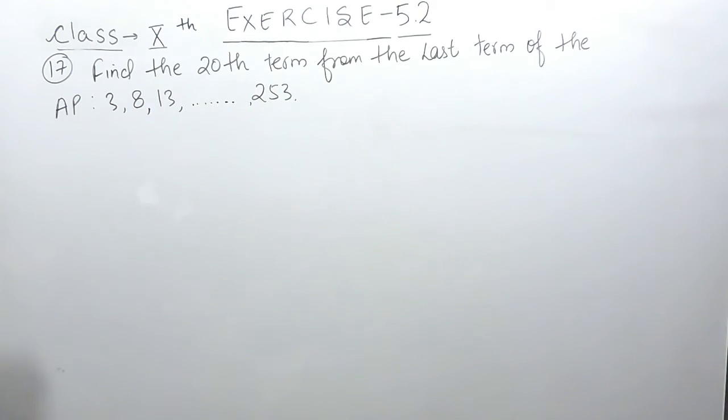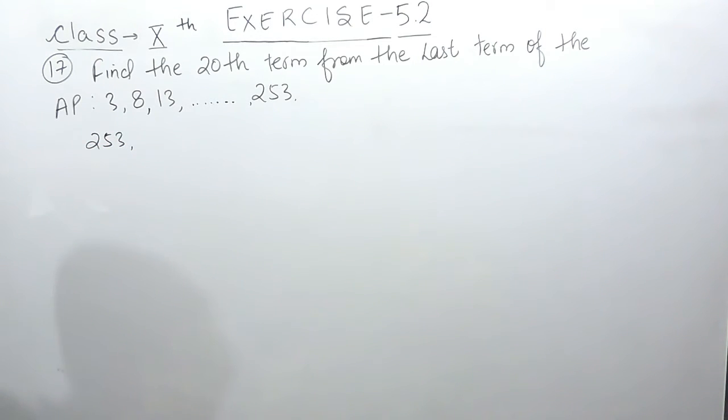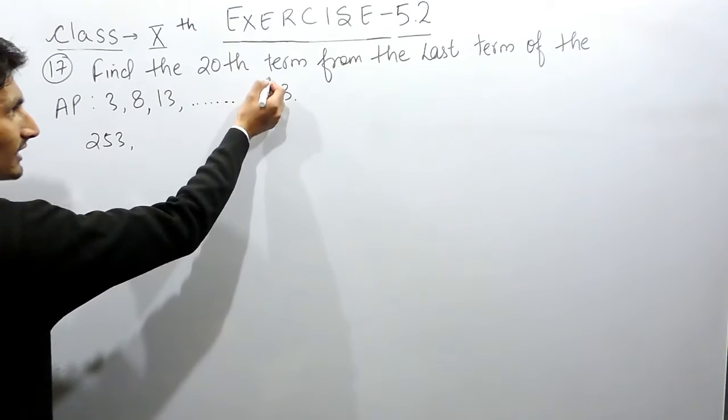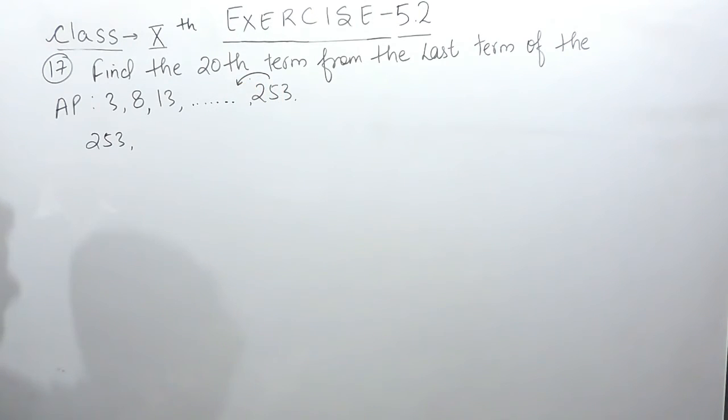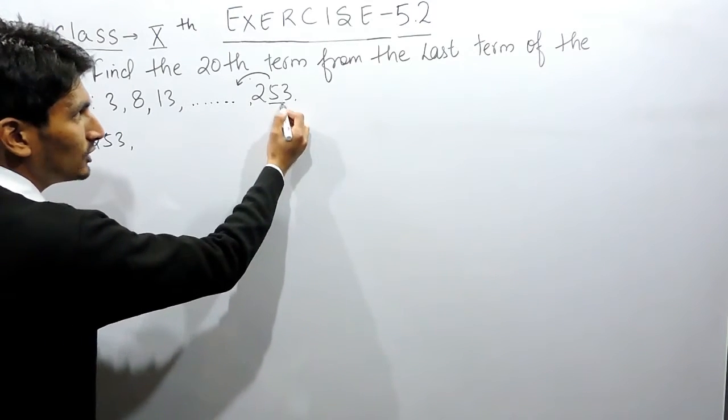If I write this AP starting from 253, this will be the first term, and the term before this will be the second term. Because this AP has been increased by 5 to form this, if I have to write the AP starting from the last, obviously I have to subtract 5.